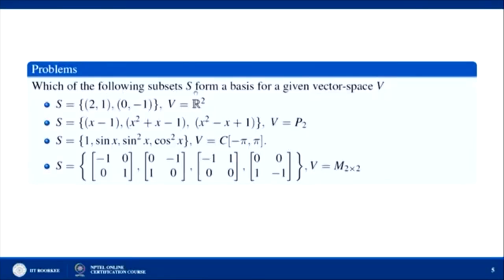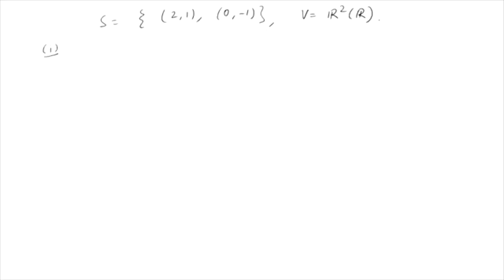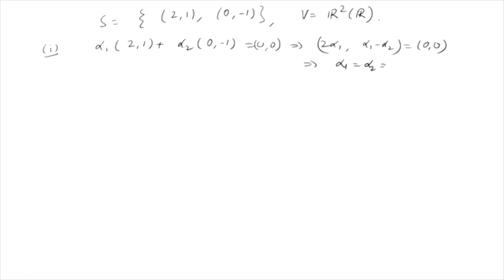Now, which of the following subsets S form a basis for the given vector space V? First example: S = {(2,1), (0,−1)} and V = R² over the real field. We check linear independence first. Taking α·(2,1) + β·(0,−1) = (0,0) gives 2α = 0 and α − β = 0, implying α = β = 0. So the set is LI.